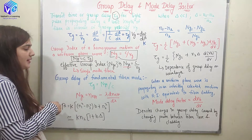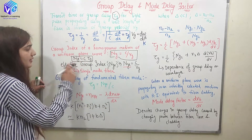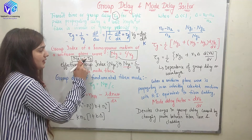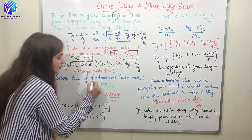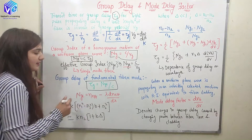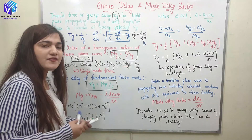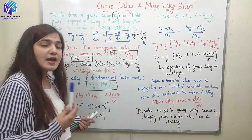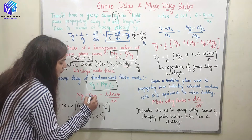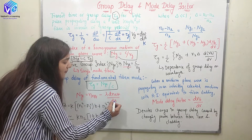The group delay of the fundamental fiber mode will be equal to nge/c. If I want to find tau_g from here, it gives tau_g = nge/c. Now nge can also be represented with the help of effective refractive index — I hope you all have watched the previous video where I talked about effective refractive index. So nge = n_effective − λ(dn_effective/dλ).